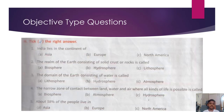Objective Type Questions. A. Tick the right answer. 1. India lies in the continent of Asia. 2. The realm of the Earth consisting of solid crust or rocks is called Lithosphere. 3. The domain of the Earth consisting of water is called Hydrosphere. 4. The narrow zone of contact between land, water and air where all kinds of life is possible is called Biosphere.